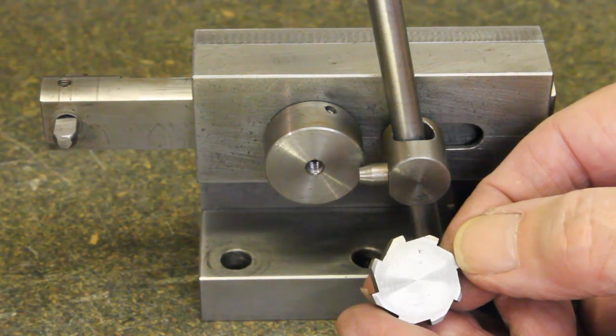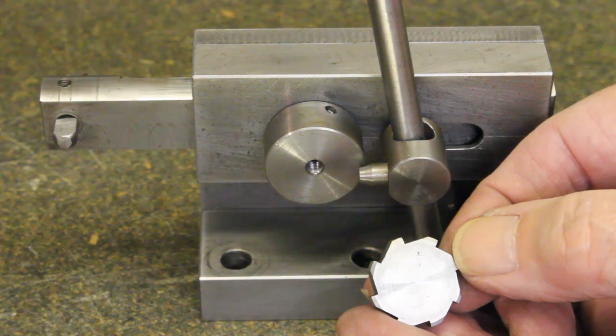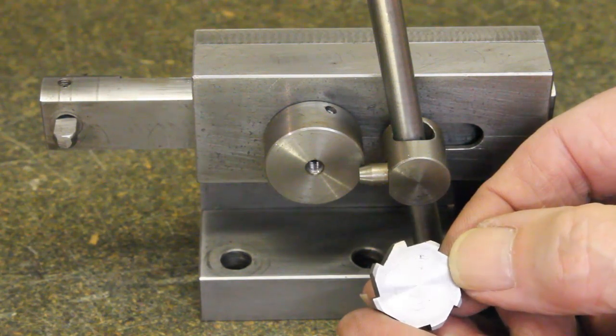For other divisions, a change of ratchet has to be fitted. This one being for eight divisions.